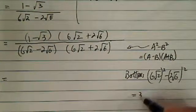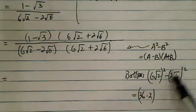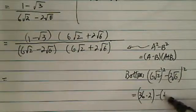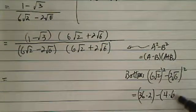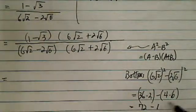And here we have 36 times 2. It has to times 2 because it's radical 2. When you square it, it should be 2. So minus 4 times 6. So this is 72 minus 24.